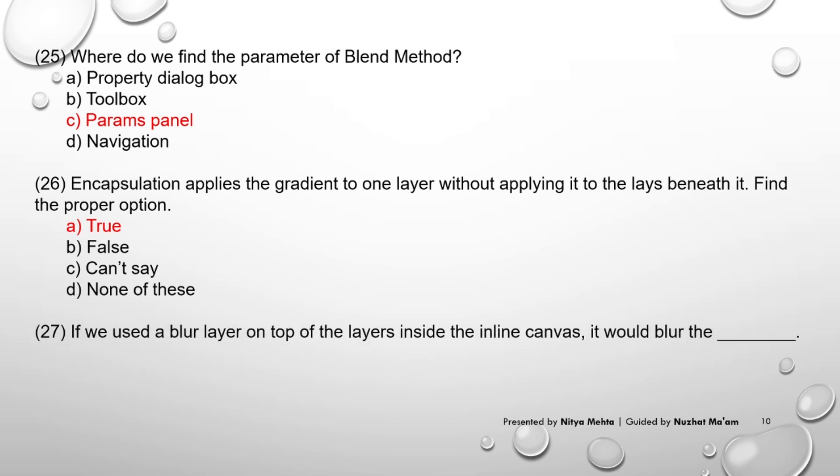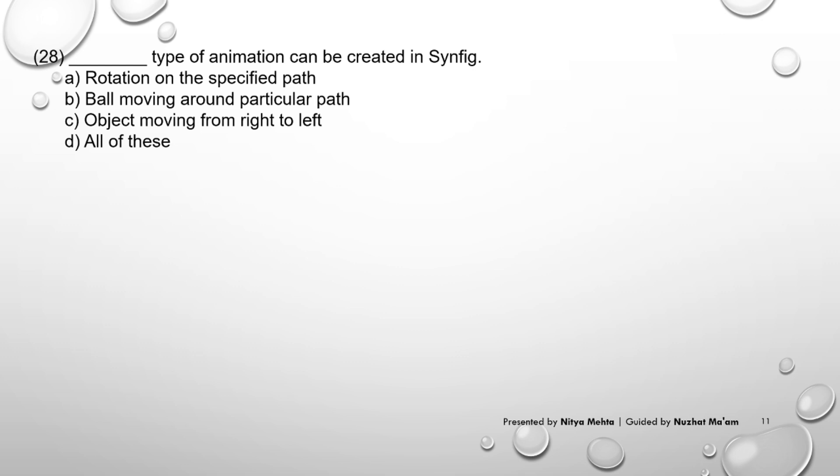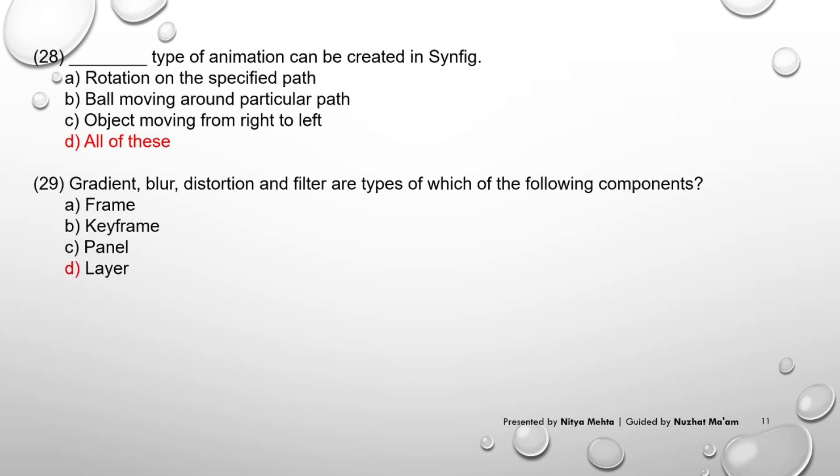Number 27. If we used a blur layer on top of the layers inside the inline canvas, it would blur the dash. A. Inline canvas layers B. All layers under inline canvas layers C. Both A and B D. None of these. Answer A. Inline canvas layers. Number 28. Dash type of animation can be created in Synfig. A. Rotation on the specific path B. Ball moving around a particular path C. Object moving from right to left D. All of these. Answer D. All of these. Number 29. Gradient, blur, distortion and filter are types of which of the following components? A. Frame B. Keyframe C. Panel D. Layer. Answer D. Layer. Number 30. Each layer has its own set of dash. A. Parameters B. Canvas C. Animation D. Command. Answer A. Parameters.